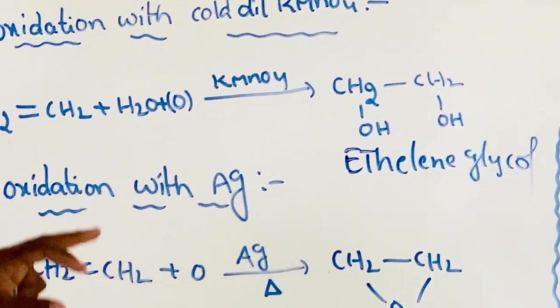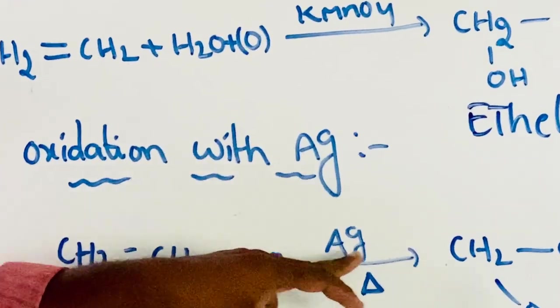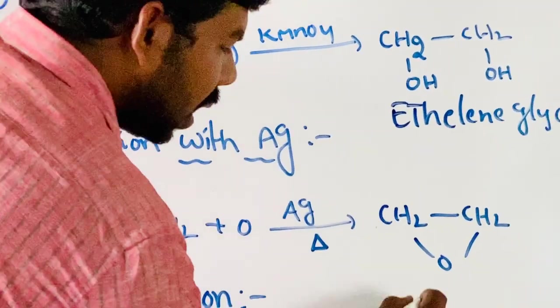Next, oxidation with silver. Ethene on oxidation with silver gives ethylene oxide or epoxide.